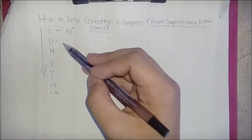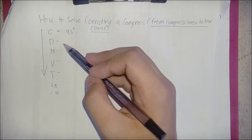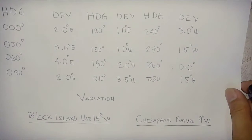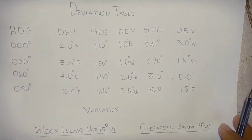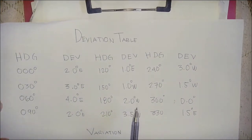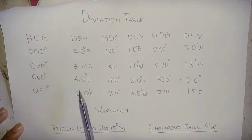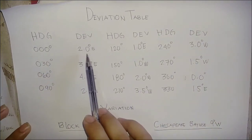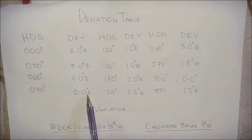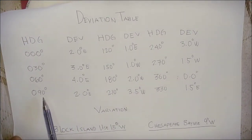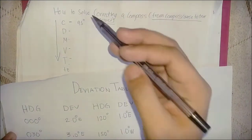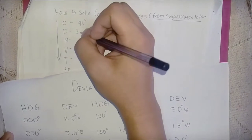To get our deviation, I'm going to show the deviation table. As you can see, our compass is 95 degrees. Looking at the table, the 90-degree entry has a deviation of 4.0 degrees, so for 95 degrees our deviation is 2.0 degrees.